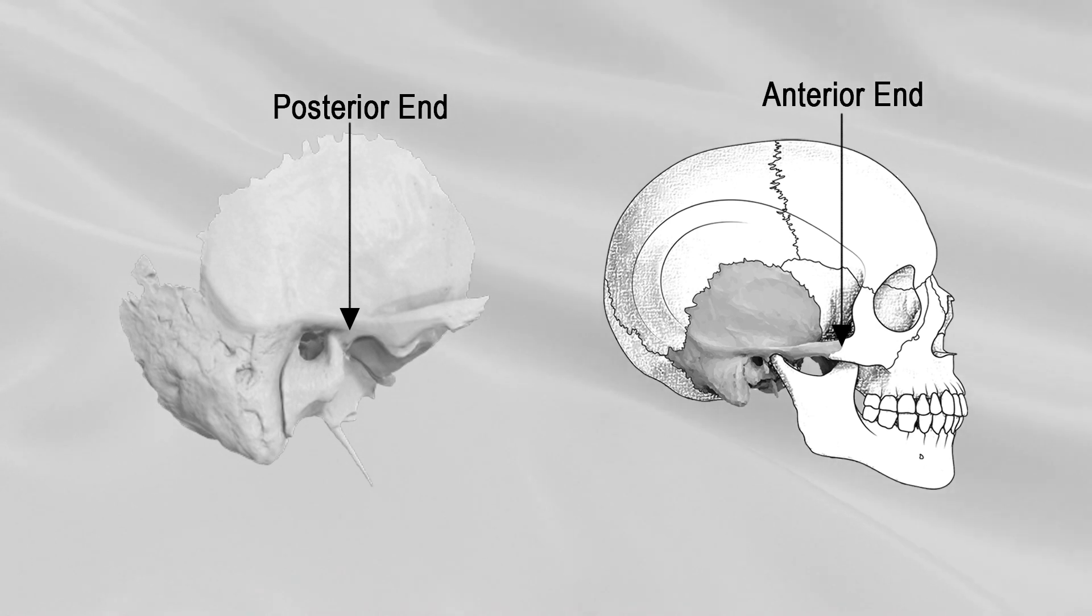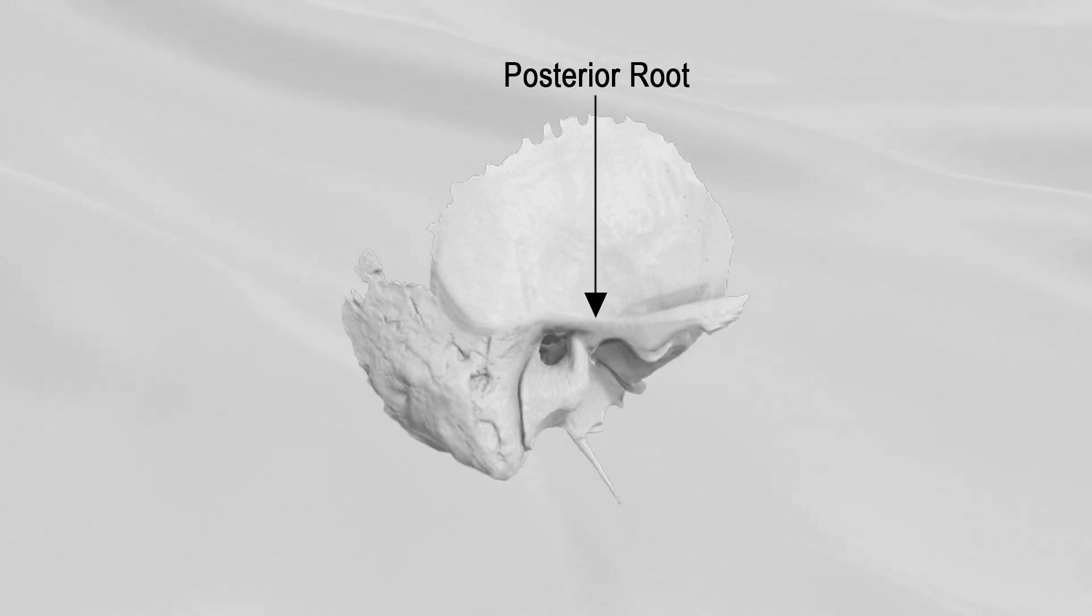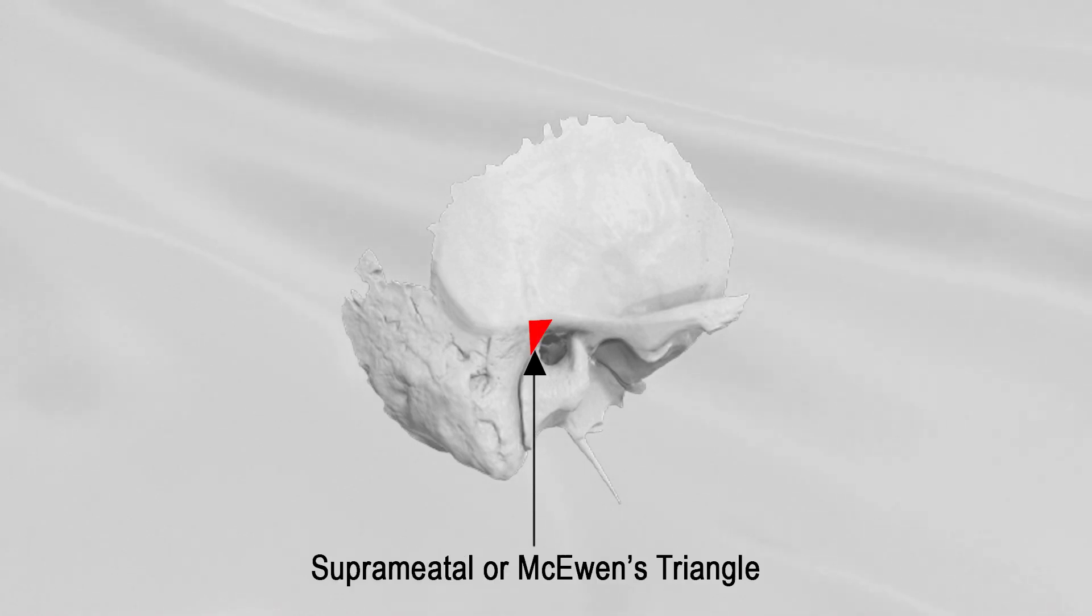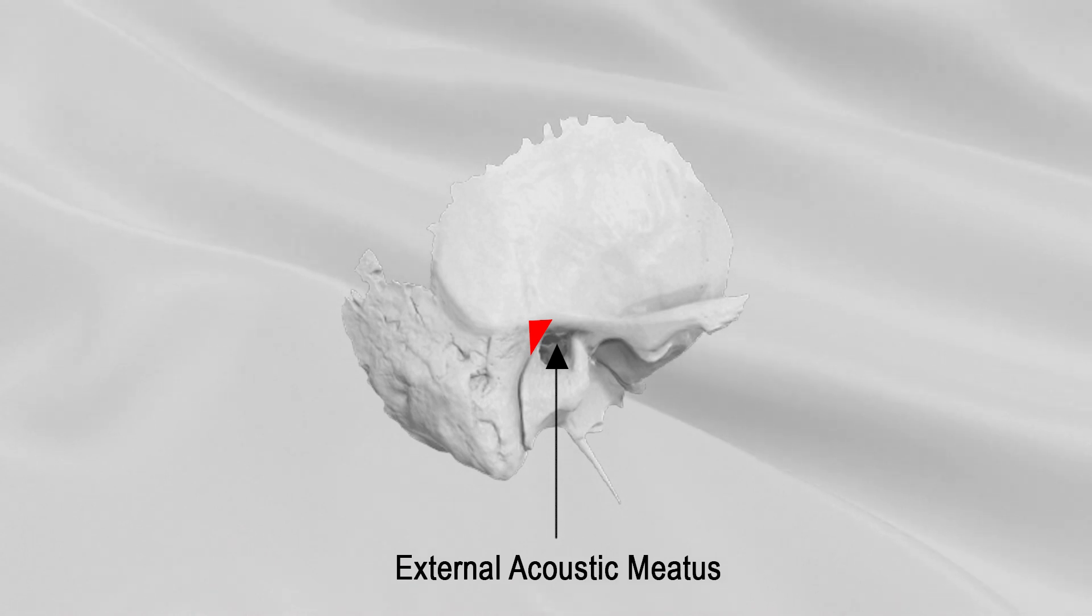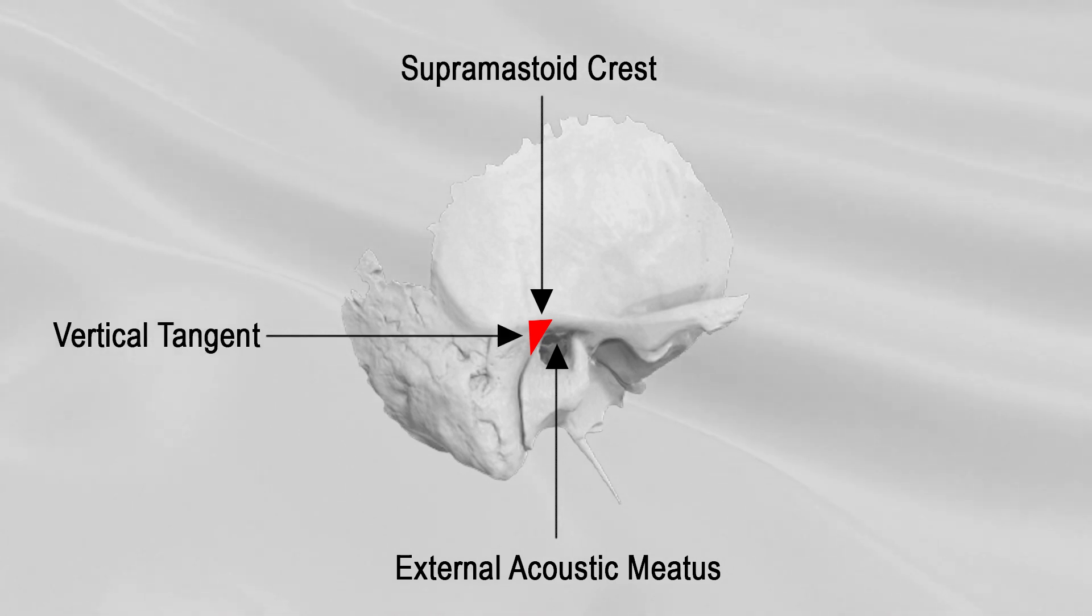The posterior end is connected to the squama by anterior and posterior roots. The posterior root of the posterior end of zygomatic process is a prolongation of the upper border. It runs backward above the external acoustic meatus and is continuous with the temporal line. Suprameatal triangle or McEwan's triangle, lying just superior to the external acoustic meatus, is a surgical landmark used to locate the mastoid antrum. It is bounded in front by the posterosuperior margin of the external acoustic meatus, above by the supramastoid crest, and behind by a vertical tangent to the posterior margin of the meatus.